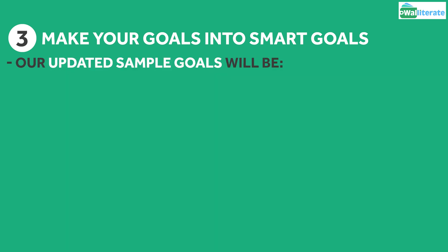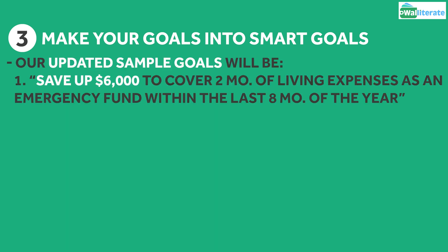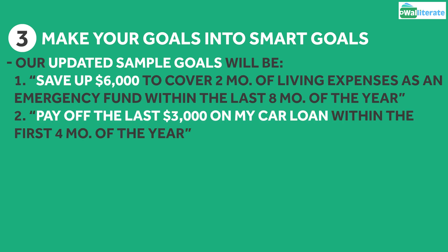At this point, our sample goals will be: save up $6,000 to cover two months of living expenses as an emergency fund within the last eight months of the year, and pay off the last $3,000 on my car loan within the first four months of the year. Both goals are specific, measurable, achievable, relevant, and time-bound.